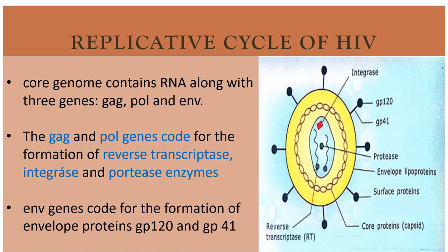The core genome contains RNA along with three genes: gag, pol, and env. The gag and pol genes code for the formation of reverse transcriptase, integrase, and protease enzymes. The env gene is responsible for formation of glycoprotein 120 and glycoprotein 41.